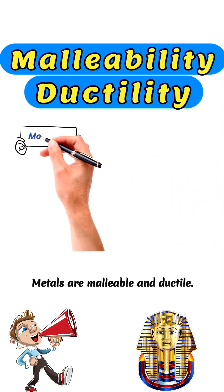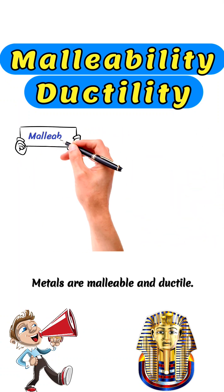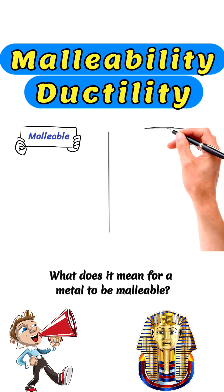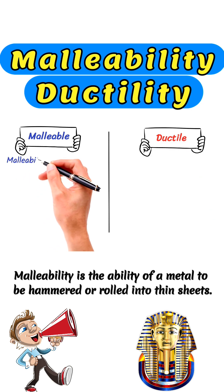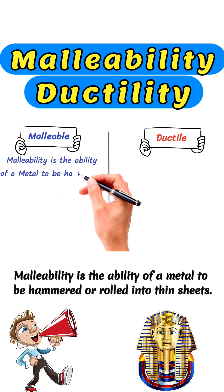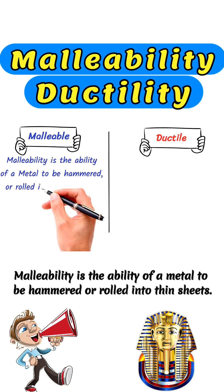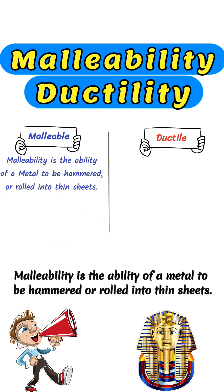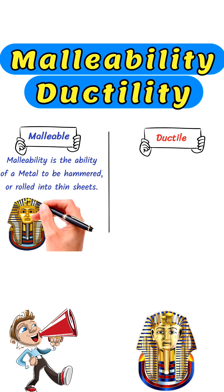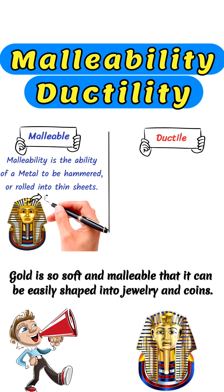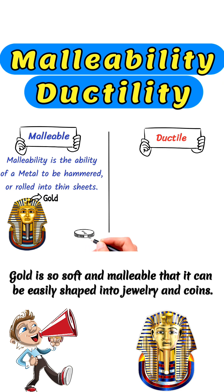Metals are malleable and ductile. Malleability is the ability of a metal to be hammered or rolled into thin sheets. One of the most well-known examples of a malleable metal is gold. Gold is so soft and malleable that it can be easily shaped into jewelry and coins.